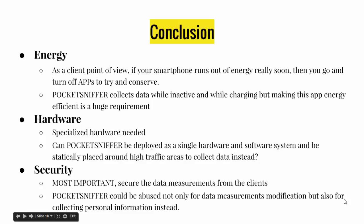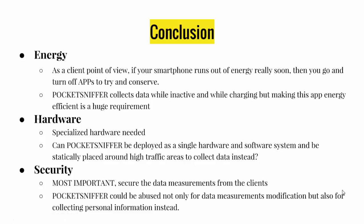For the hardware part, the paper mentions that not all smartphones can support the app due to specialized hardware limitations. In the first experiment, the researchers actually used specialized Pocket Sniffer clients to get the rogue access point information. Our question is whether they should deploy Pocket Sniffer as a hardware and software system instead of just an app — perhaps as a static hardware system like a pole antenna around campus, or develop their own hardware, or even a detachable plug-in that connects to the phone via Bluetooth.